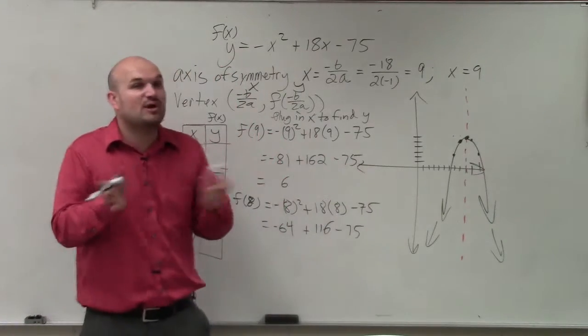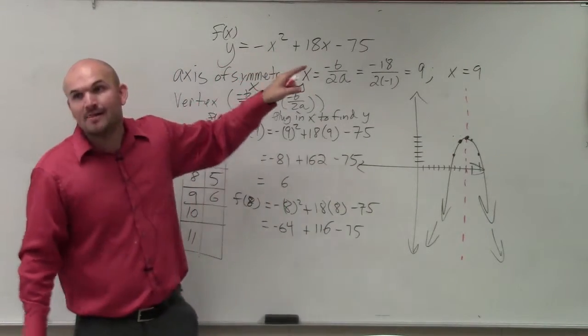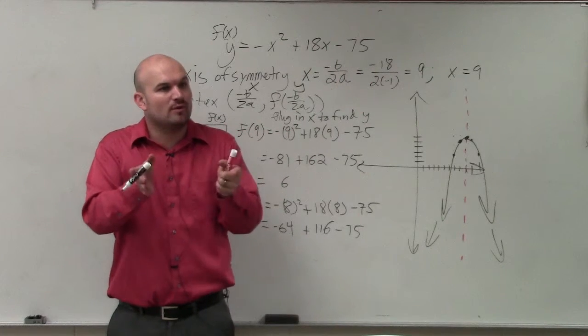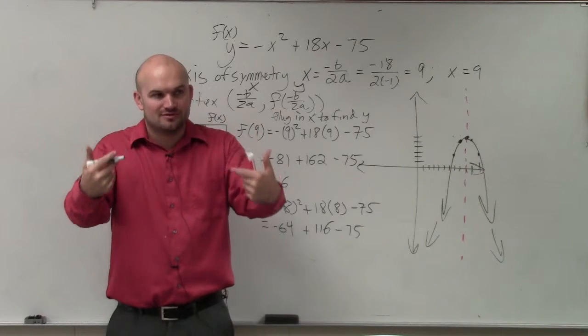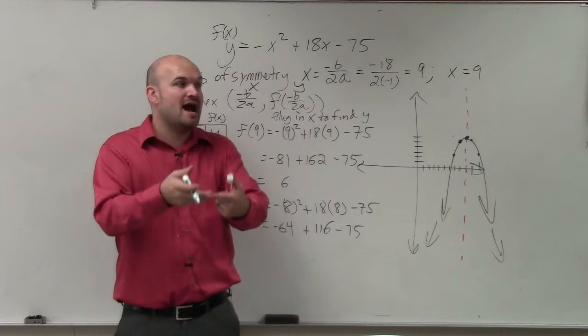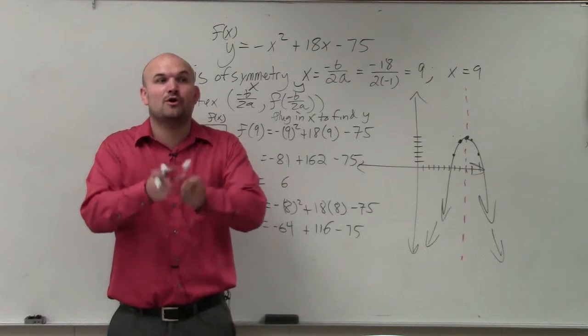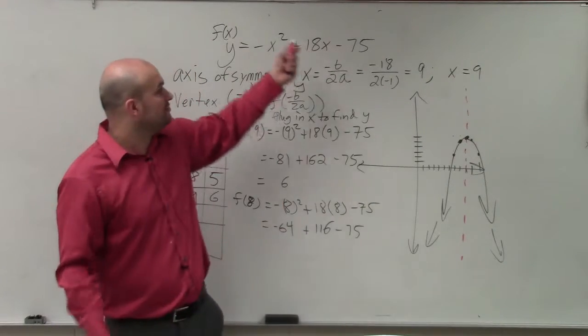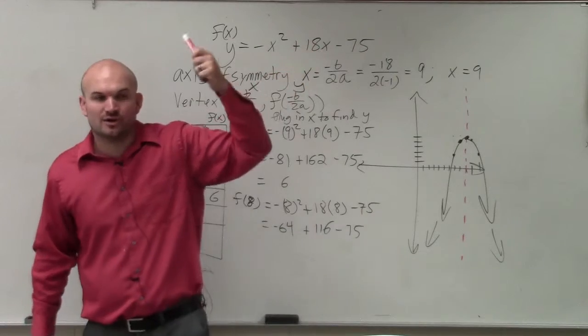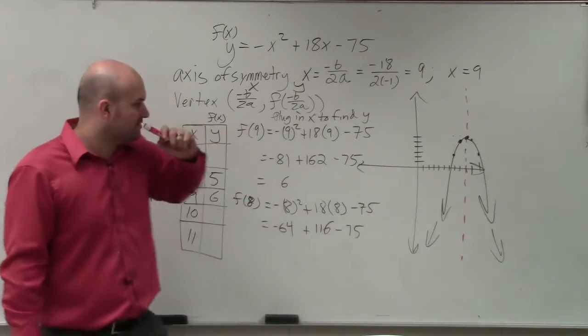Also remember, if there's a compression, if there is an a, like let's say a was 2, instead of going over 1, up 1, you'd go over 1, up 1 times 2, right? If a was 1 half, instead of going over 1, up 1, you'd go over 1, up 1 times 1 half. So it'd just be over 1, up 1 half. You're multiplying that a by the y-coordinate, your value.